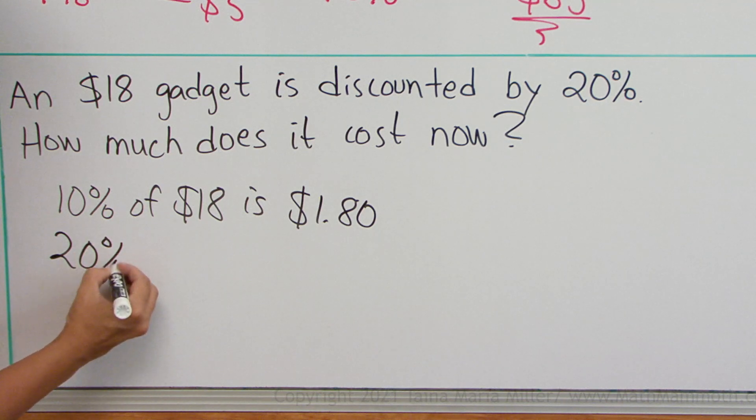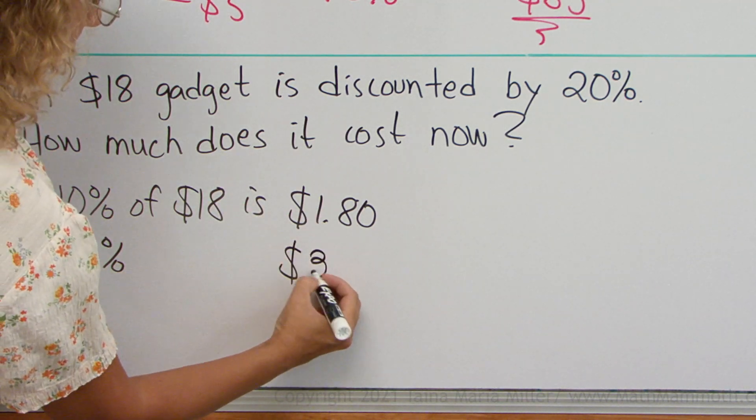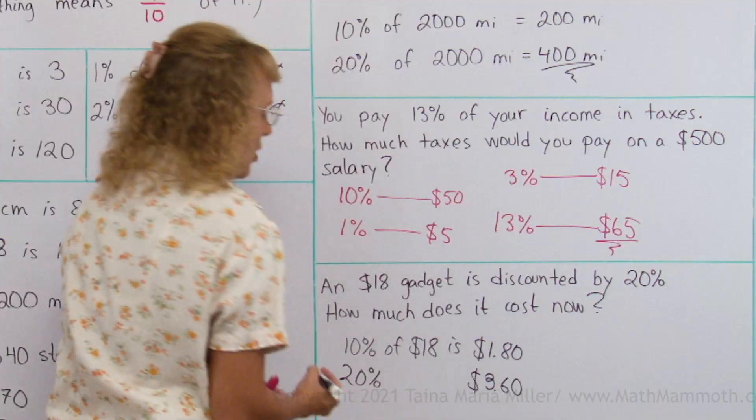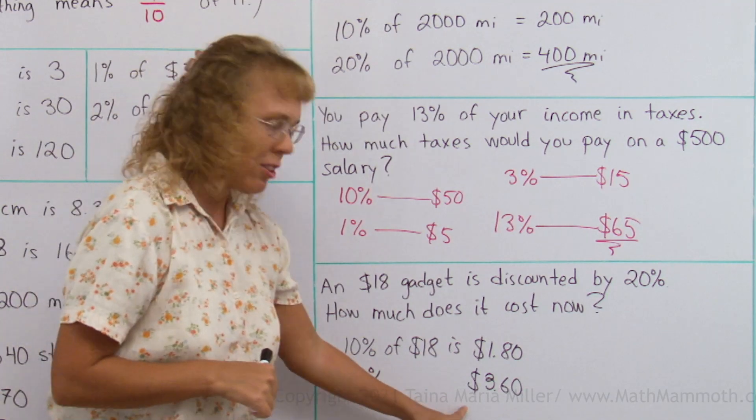20% of that same would be double that, $3.60. So that gives you the amount that it is discounted by in dollars, okay?